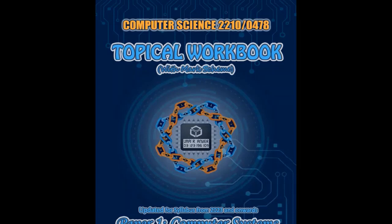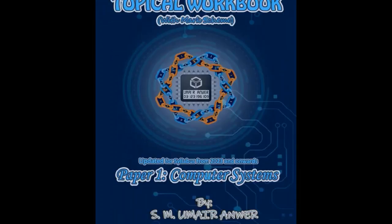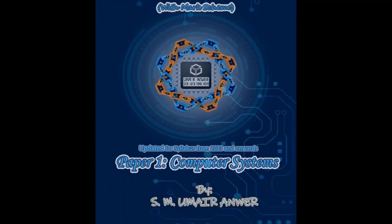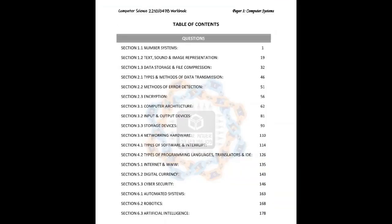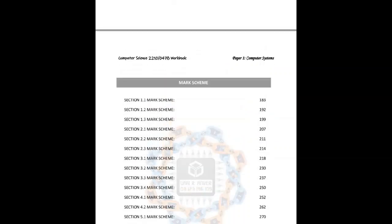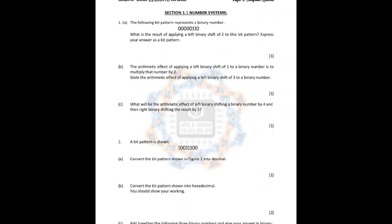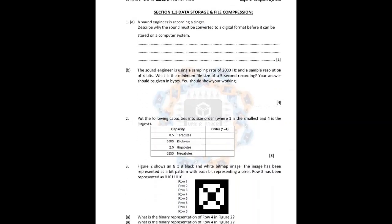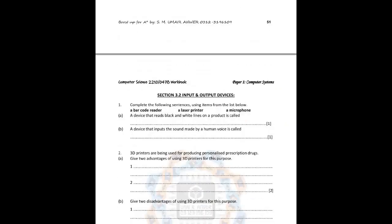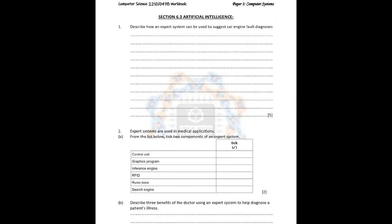Let me introduce the topical workbook for computer science, 2210 or 0478. This is Workbook One for Paper One, covering computer systems. As you can see from the table of contents, I've included questions on each and every subtopic from the syllabus, along with the mark scheme. Here are some actual pages as a preview from sections 1.1, 1.3, 2.2, 3.2, 5.3, covering cyber security and artificial intelligence.